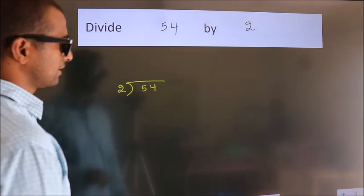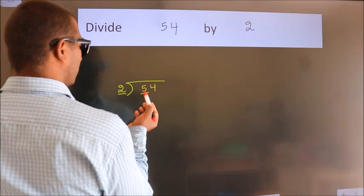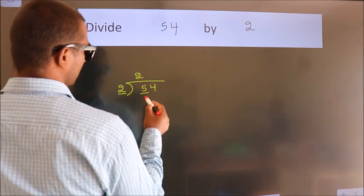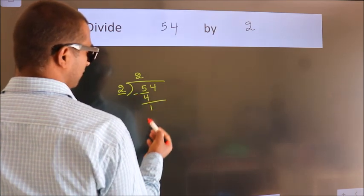Next, here we have 5, here 2. A number close to 5 in the 2 table is 2 times 2, which is 4. Now, we should subtract. We get 1.